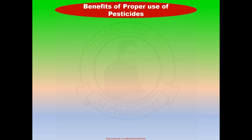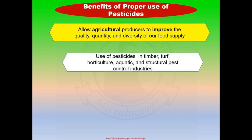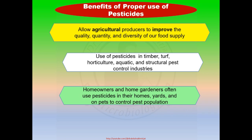Benefits of proper use of pesticides: The proper use of pesticides allows agriculture producers to improve the quality, quantity, and diversity of our food supply. Pesticides are also used in timber, turf, horticulture, aquatic, and structural pest control industries. Homeowners and home gardeners often use pesticides in their homes, yards, and on pets to control pest populations.